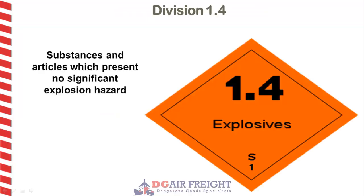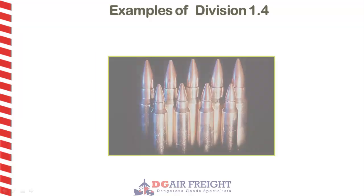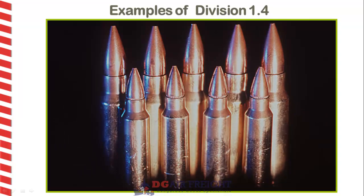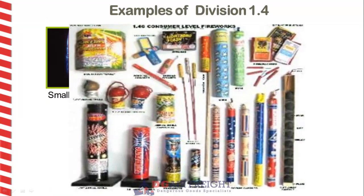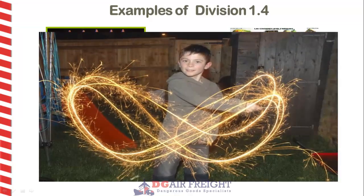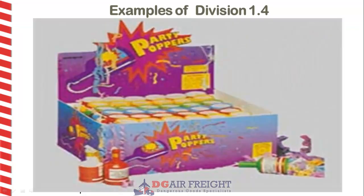Division 1.4 are explosives that don't pose a significant risk. Examples include small arms ammunition, shop bought fireworks, sparklers and party poppers.